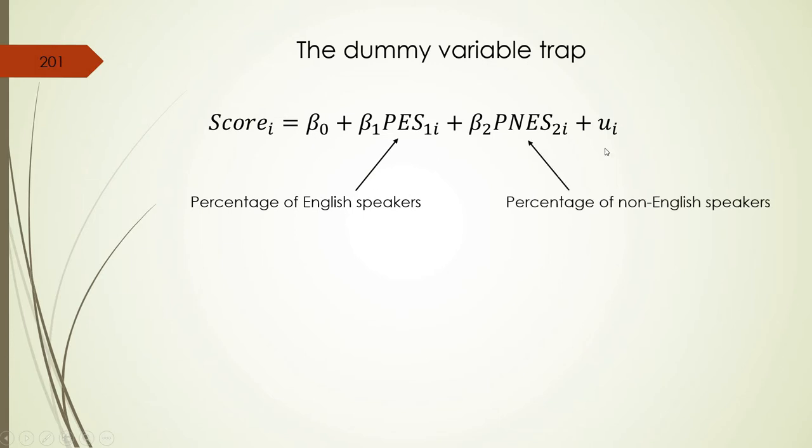For example, if we have the model of our test scores but our independent variables in the model are percentage of English speakers and also percentage of non-English speakers among our students. These two variables are actually perfectly correlated because if one is 60% the other one is 40%. So in advance we know that we have multicollinearity and that is perfect multicollinearity. We need to solve that problem. The solution is actually to drop one of these two variables, for example, to drop percentage of English learners.